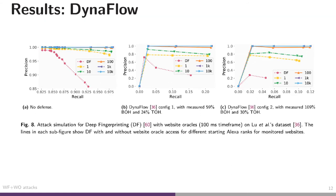Moving on to constant-rate defenses with significantly more overhead, for CS-BuFLO and Tamaraw we see a huge increase in precision, but only ever so slight improvement in recall. The gain of the oracle is that the classifier will not produce false positives even with these defenses in place. However, the defenses are still very effective because they reduce recall to ridiculously low levels, especially for Tamaraw. We see the same with two configurations of Dynaflow — precision is very good from around Alexa rank 100 to 1000, and false positives are reduced significantly, almost to near-perfect, especially for higher Alexa ranks.